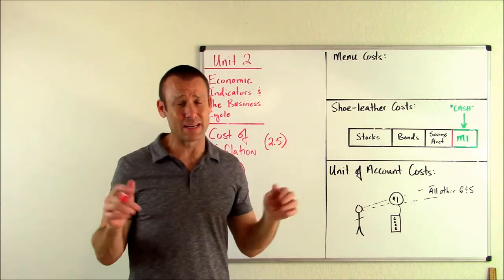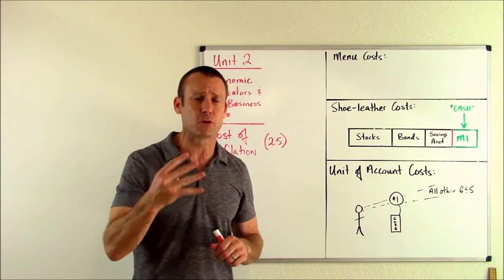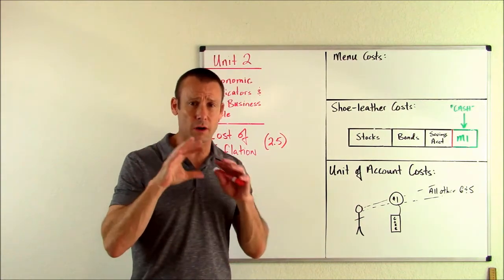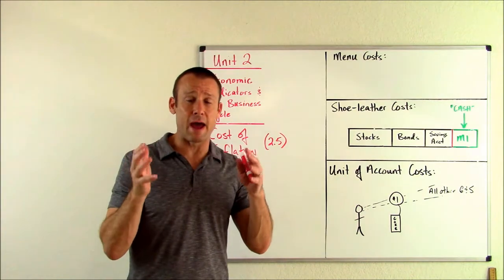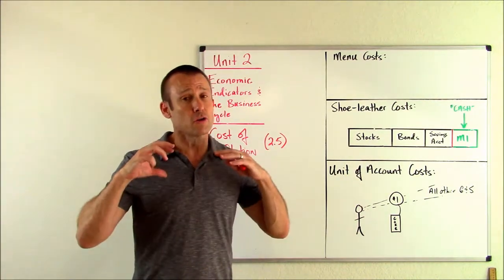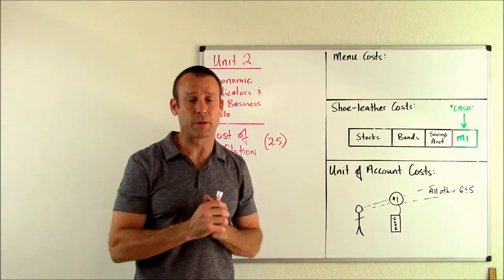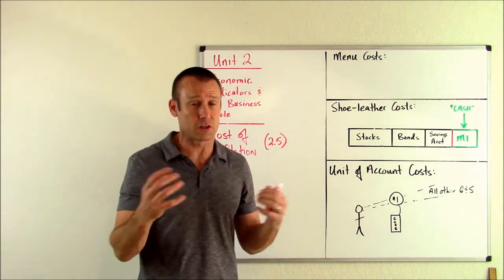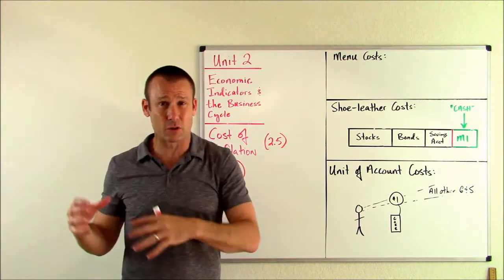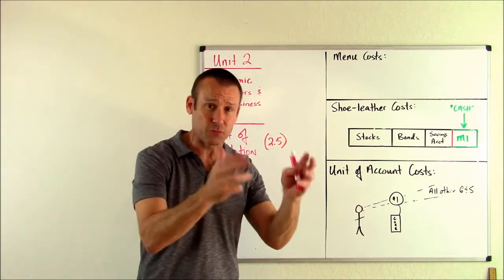It's changing prices anywhere on every pamphlet, brochure, every billboard, every database, anywhere you have your prices printed or displayed or have them categorized. You have to change those prices. So the use of resources to changing prices anywhere is this thing we mean by menu cost. Why is that a cost to an economist? Because we're going to have to use resources to change prices, and that's the only reason we're doing it is because of inflation.